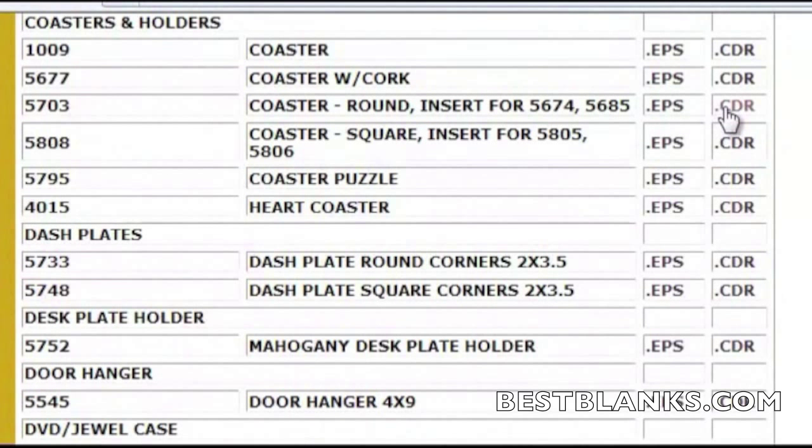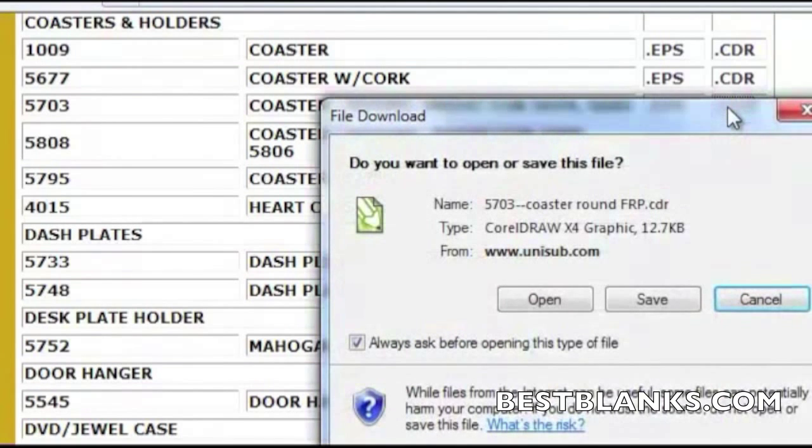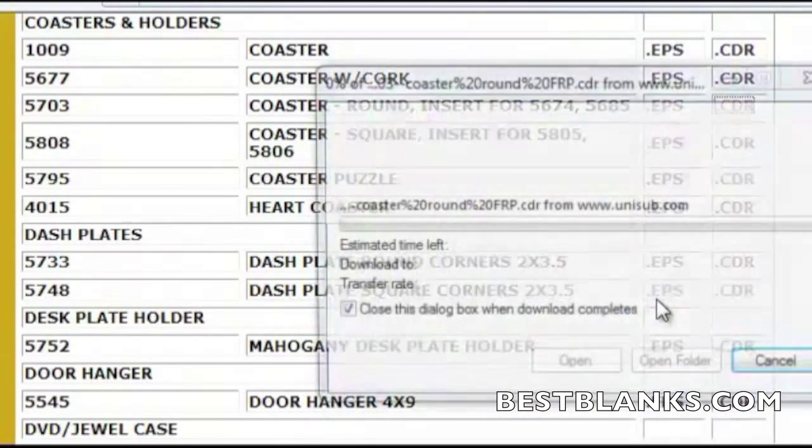Select the type of file you wish to download. CDR is a proper choice for CorelDRAW. Click CDR and then click save.